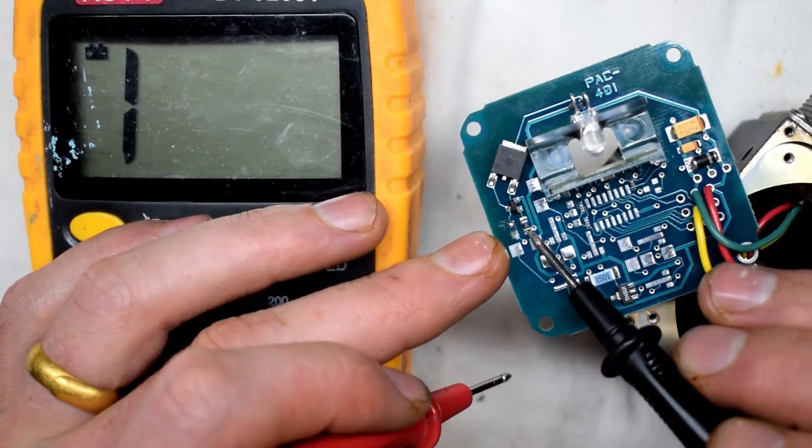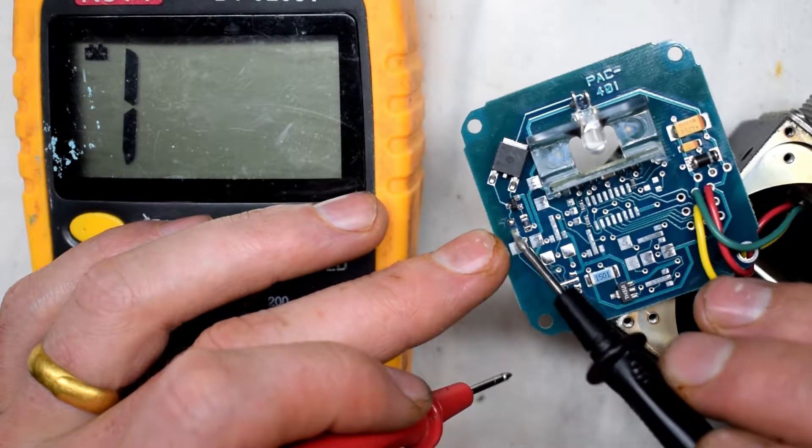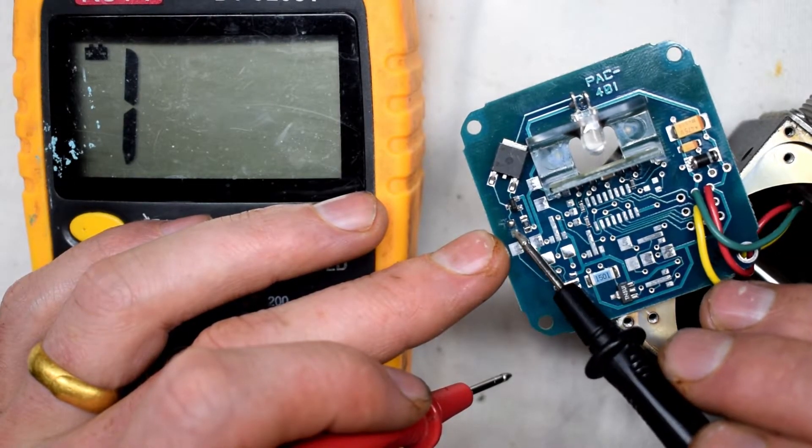We have a couple resistors. We have a 56 ohm resistor and right here should be a 10k ohm resistor.